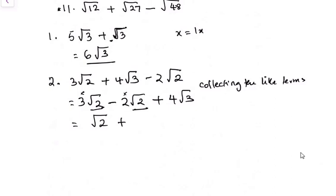So in this case, we bring the plus 4√3 down, and that should be our final answer because we cannot solve this 4√3 further. It's staying on its own.